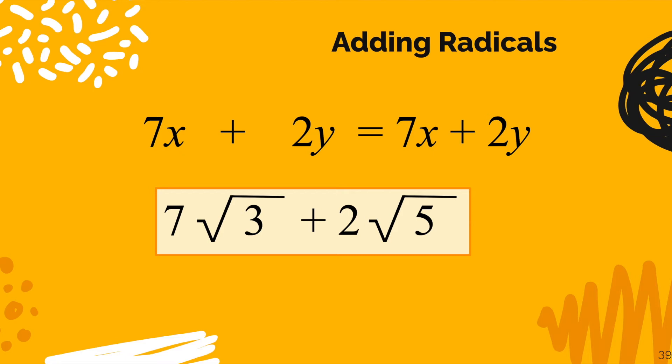I need you to remember that you do not get radical 8 here, just like we didn't get radical 18 at the beginning of this video. 7 radical 3 plus 2 radical 5 is the simplest form.